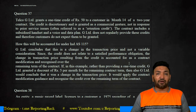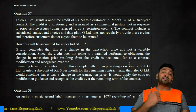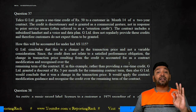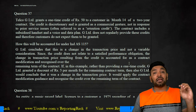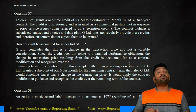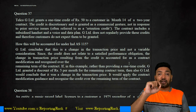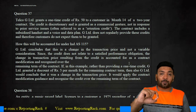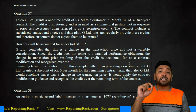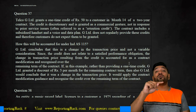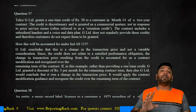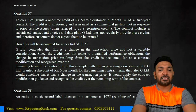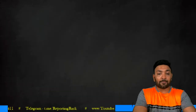However, if Telco G Limited does provide this one-time credit to a customer, it should be treated as a contract modification — a modification in the terms of the contract. When a contract is modified in month 14, the modification alters the transaction price. The reduced transaction price must then be allocated over the remaining contract life, which is 10 months. Let me illustrate this with a numerical example.